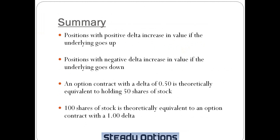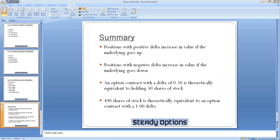Summary: positions with positive Delta increase in value if the underlying goes up. Positions with negative Delta increase in value if the underlying goes down. An option contract with a Delta of 0.50 is theoretically equivalent to holding 50 shares of stock. 100 shares of stock is theoretically equivalent to an option contract with a 1.00 Delta. This is theoretical because as stocks go up or down, deltas will change as well. Let's see some examples.